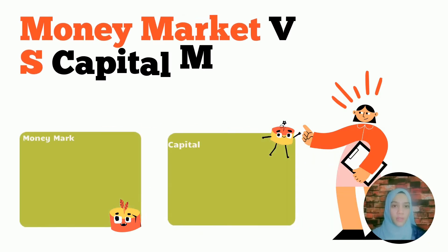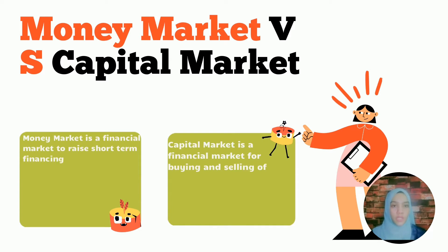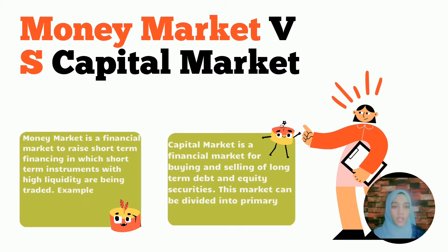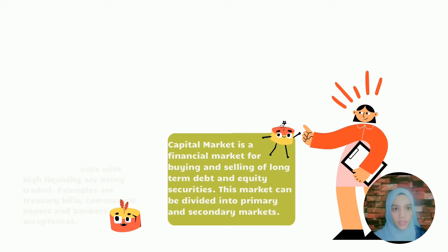Money market versus capital market. Money market is a financial market to raise short-term financing in which short-term instruments with high liquidity are being traded. Examples are T-bill, commercial paper and bankers' acceptance. Capital market is a financial market for buying and selling of long-term debt and equity securities. This market can be divided into primary and secondary market.